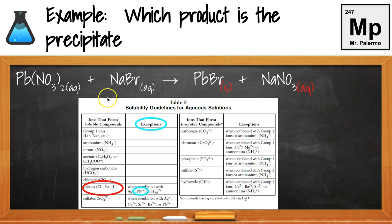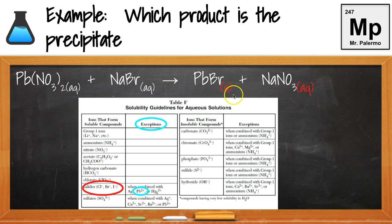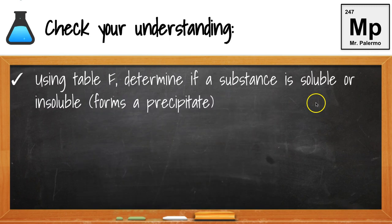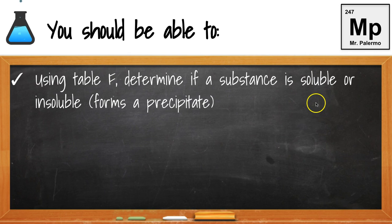In these double replacement reactions, where we have two replacements — Pb combined with Br, and Na combined with NO3 — if the reaction takes place, we're always going to have one solid precipitate and one aqueous solution. If we end up with both aqueous solutions, then the reaction did not take place. At this point, you should be able to use Table F to determine if a substance is soluble or insoluble, meaning it forms a precipitate.